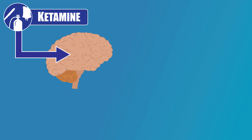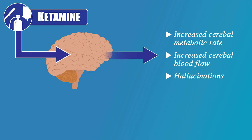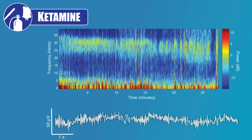Knowing that ketamine's effect on the brain results in increased cerebral metabolic rate, increased cerebral blood flow, and hallucinations, what would you predict the EEG looks like for ketamine-induced anesthesia? Low-dose ketamine is associated with an active EEG signal. The EEG for patients receiving ketamine typically consists of fast oscillations in the high beta, low gamma frequency range, around 25 to 32 hertz. The pattern may take a couple of minutes after the initial ketamine dose to appear.